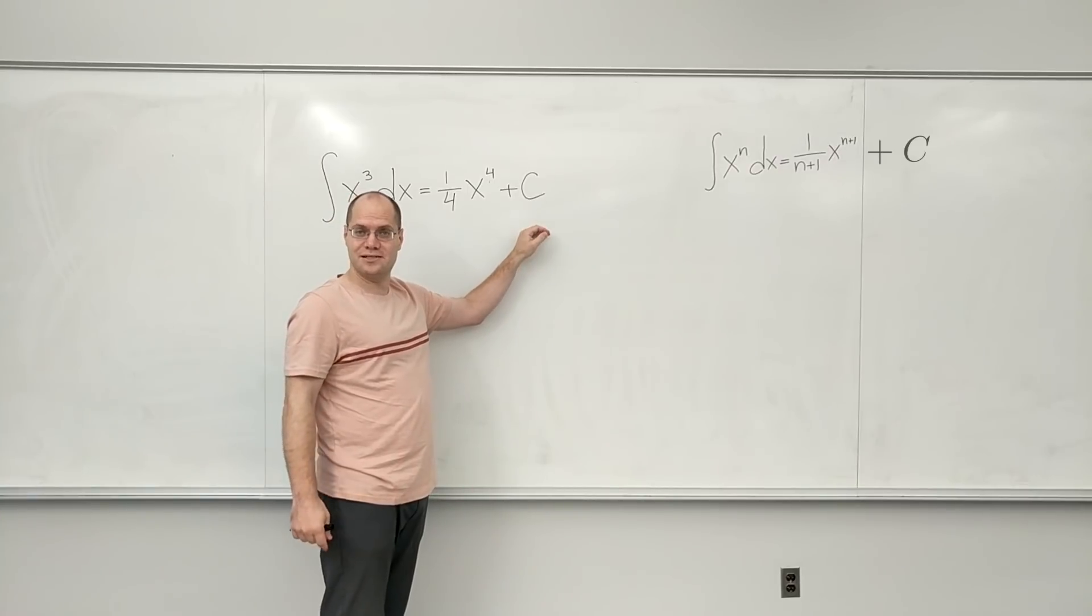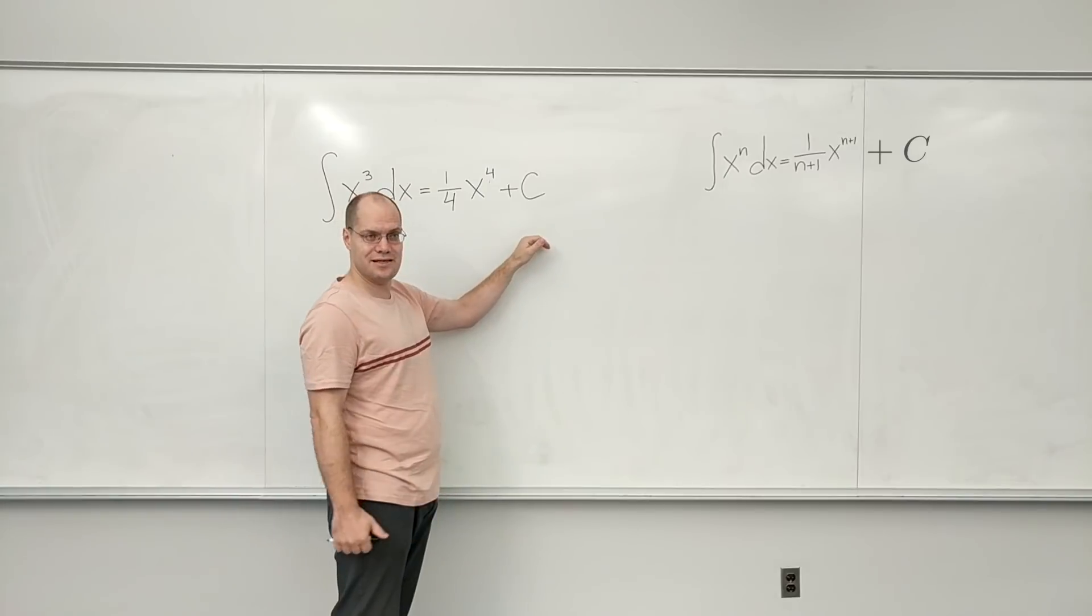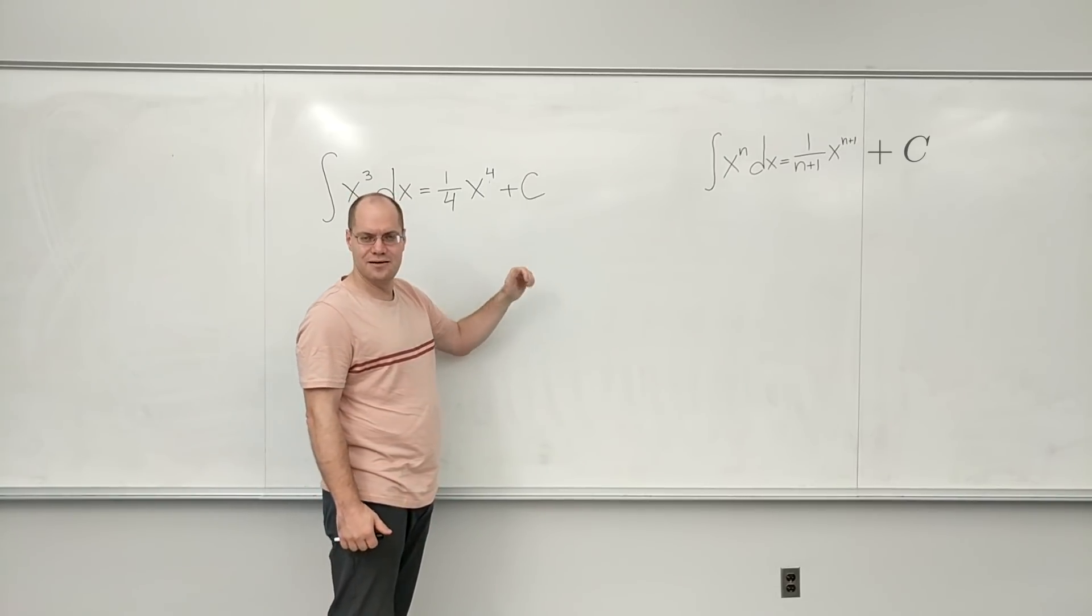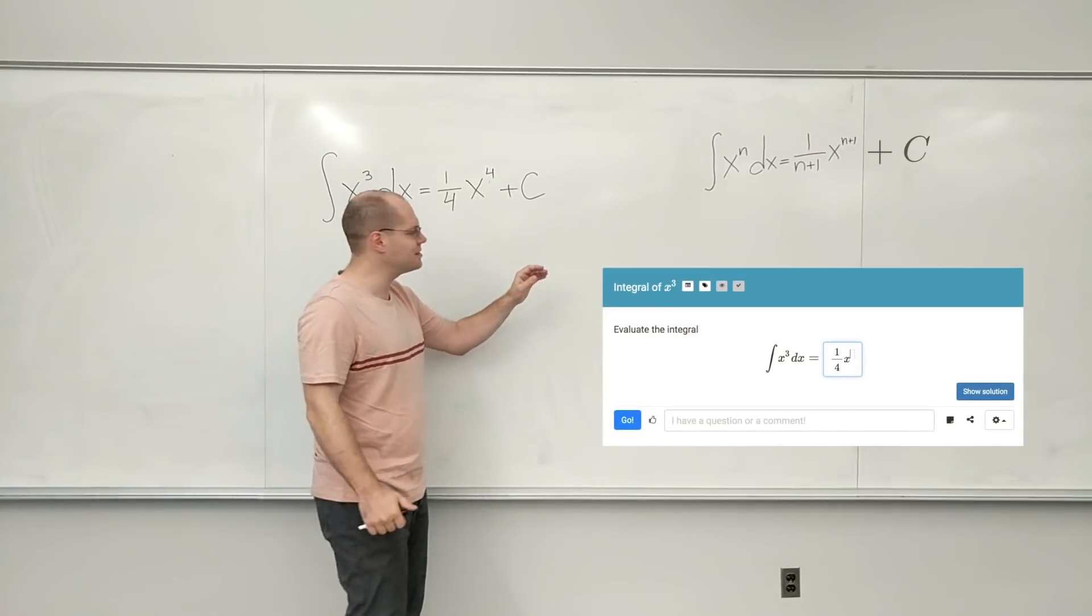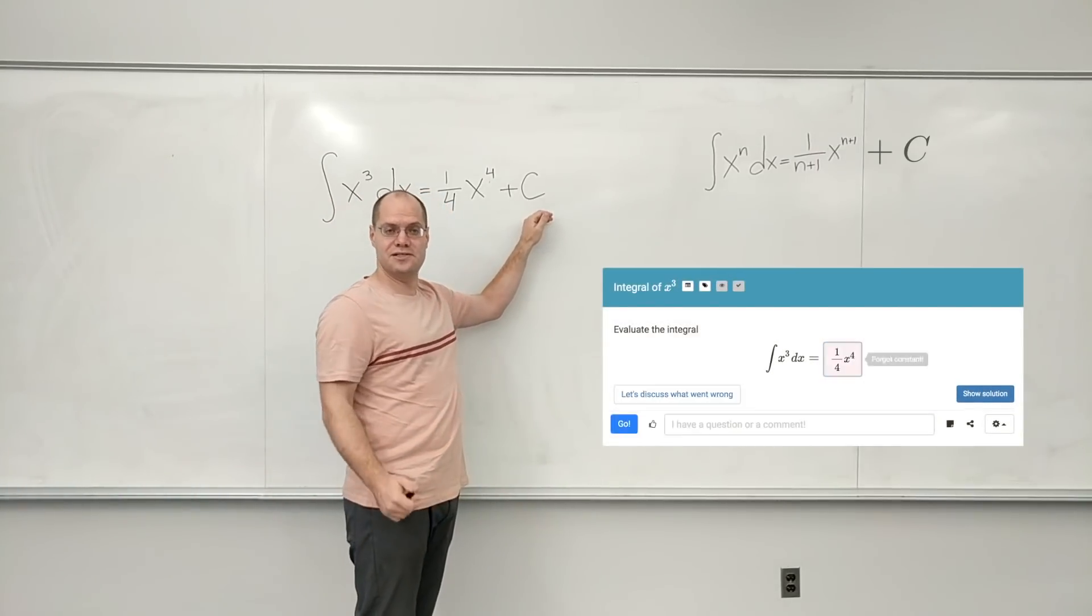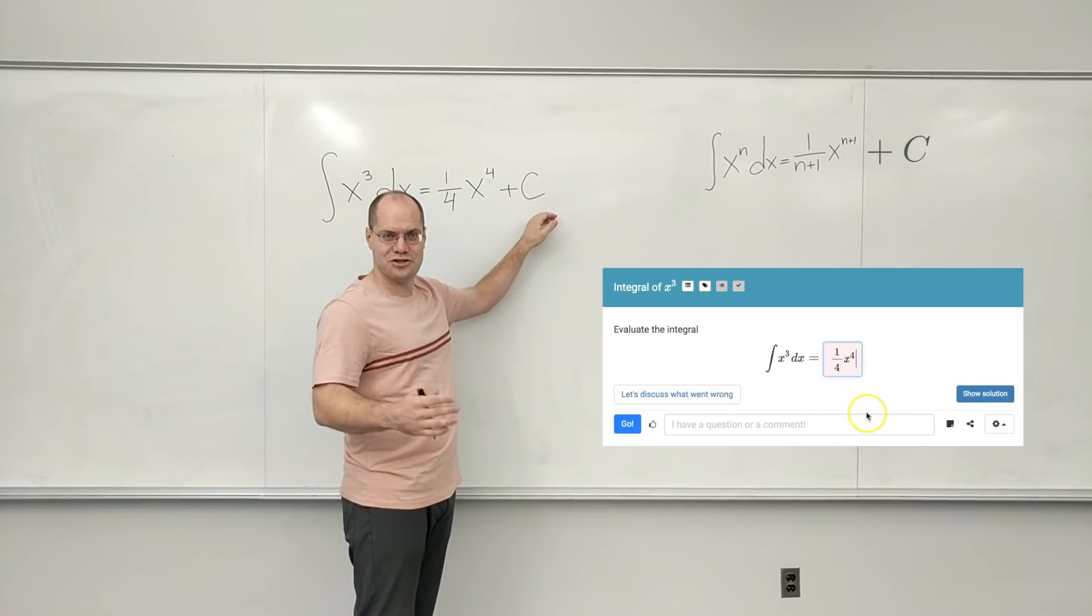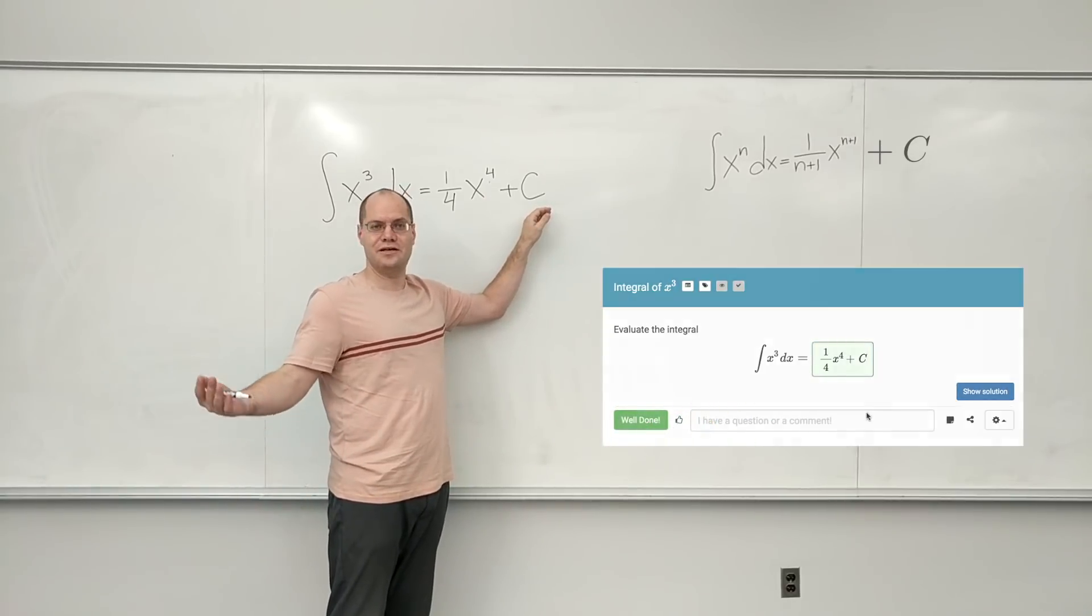Will Lemma let you forget plus C? No, it won't. You have to enter plus C, or actually plus any other constant. Lemma is very smart. You can say plus D, plus A, plus Z, plus alpha. But you need to have an additive constant in there, and if you don't, Lemma will say that you forgot the constant and then you'll be forced to put it in. And you can try it out. You can put in any constant, except what can you not put in as a constant?